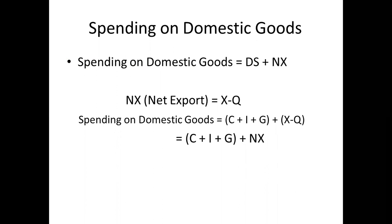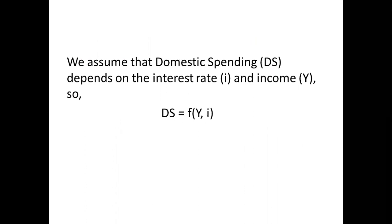Spending on domestic goods also includes net exports. That means spending on domestic goods equals domestic spending plus net exports. Net exports, denoted as NX, is the difference between exports X and imports Q. So spending on domestic goods can be written as C plus I plus G plus X minus Q, or C plus I plus G plus NX. We assume that domestic spending DS depends on the rate of interest and domestic income Y.